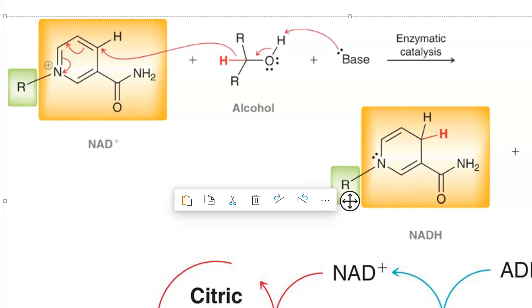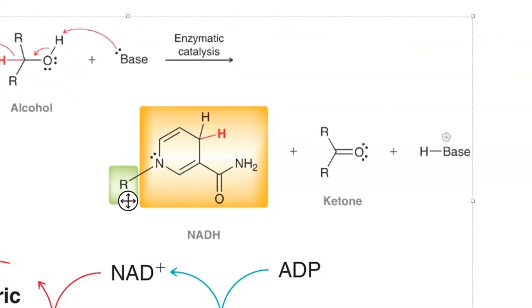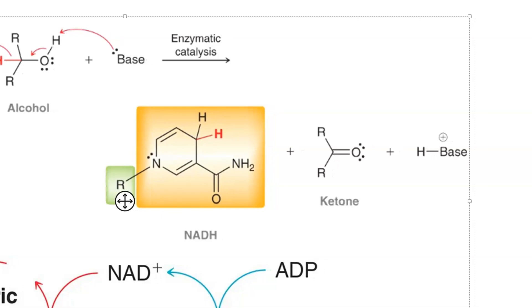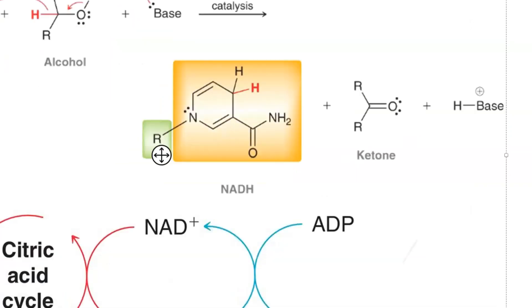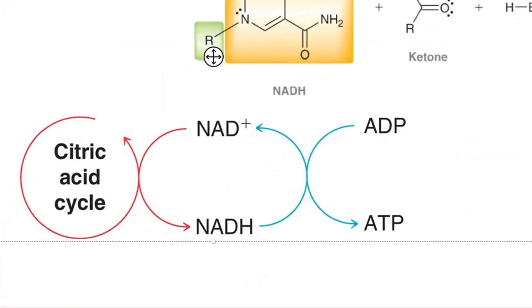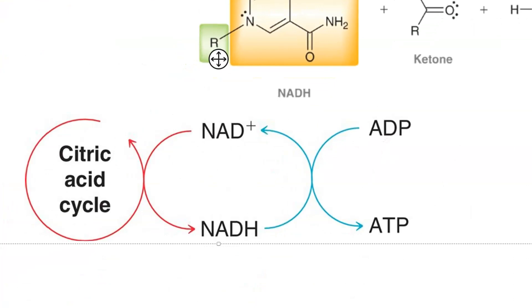If we're starting out with NAD+, we can react that with an alcohol, a base, and enzymes to turn the NAD+ back into NADH. The alcohol becomes a ketone and we get the conjugate acid — and all of this is part of the citric acid cycle.